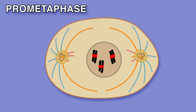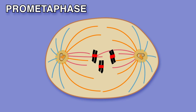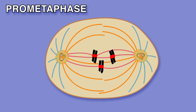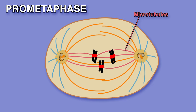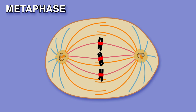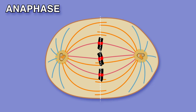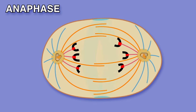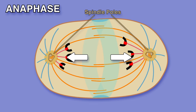Prometaphase begins when the nuclear envelope breaks down. This means that chromosomes can now attach to spindle microtubules via kinetochores, resulting in the movement of the chromosomes. Metaphase involves the alignment of chromosomes along the equator of the spindle, with microtubules attaching sister chromatids to opposite poles of the spindle. Anaphase involves the synchronized separation of sister chromatids to form two daughter chromosomes, which are pulled towards the spindle poles. During this process, not only do the kinetochore microtubules shorten, but the spindle poles also move apart.